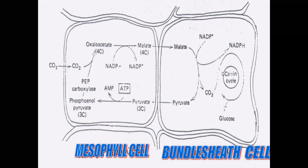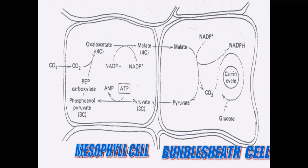In decarboxylation, one carbon is released as carbon dioxide in the presence of dehydrogenase enzyme. The released carbon dioxide is received by RuBP — ribulose 1,5-bisphosphate — which participates in the Calvin cycle, allowing the bundle sheath cell chloroplast to synthesize glucose or starch. Malic acid also releases pyruvic acid containing three carbon atoms, and this pyruvate enters back into the mesophyll cells through the plasmodesmata.